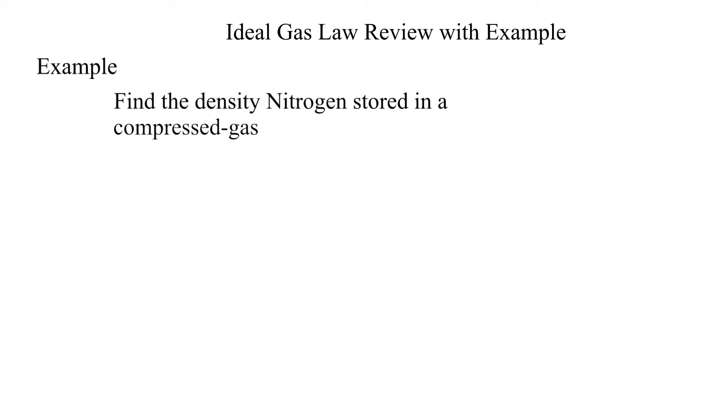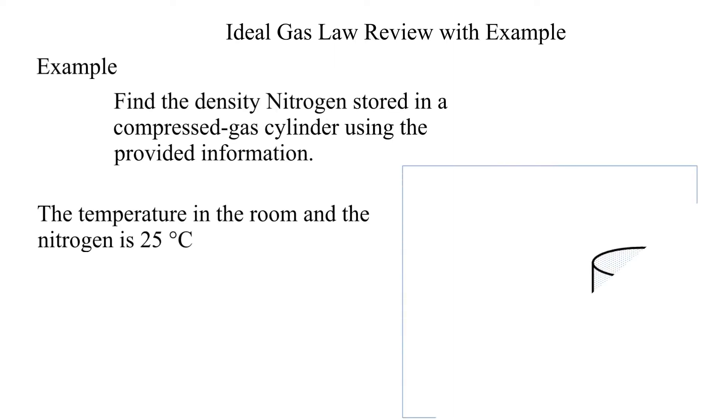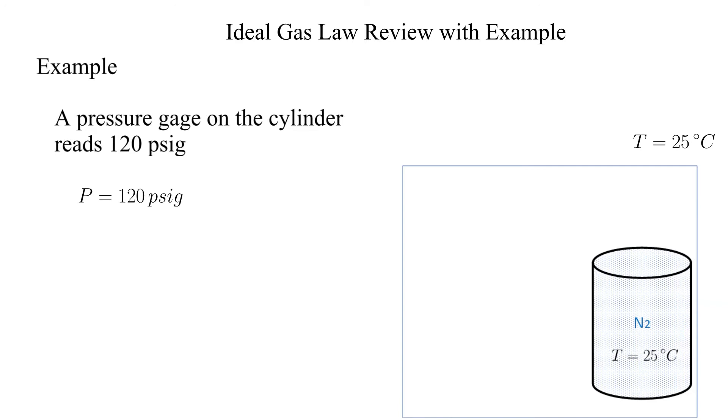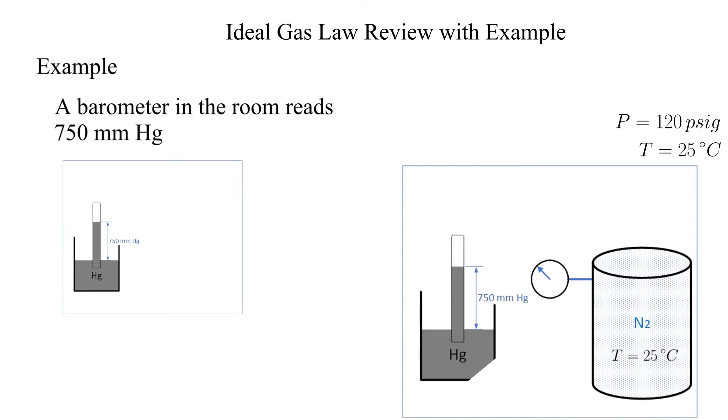Now let's work an illustrative example. Our goal will be to determine the density of nitrogen stored in a compressed gas cylinder. We will treat the nitrogen as an ideal gas. The temperature of the nitrogen and surrounding is 25 degrees Celsius. A pressure gauge indicates 120 psi G inside the cylinder.